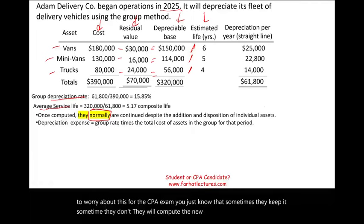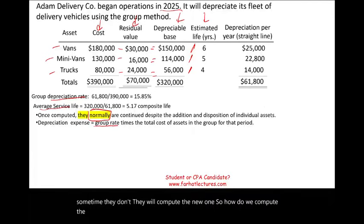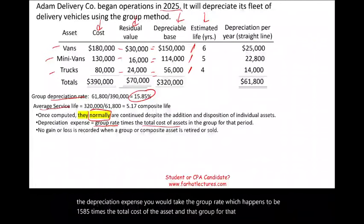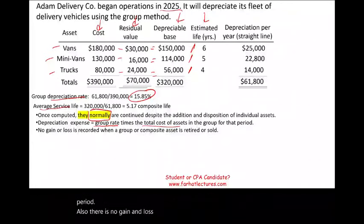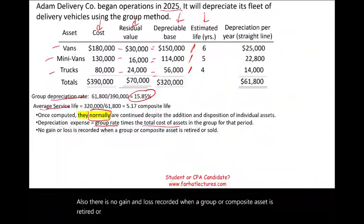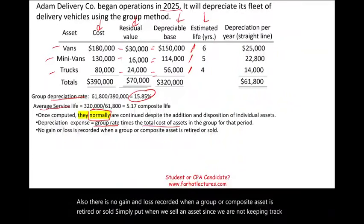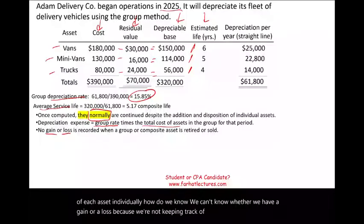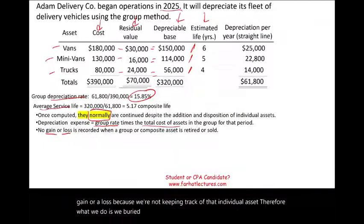To compute the depreciation expense, you take the group rate of 15.85% times the total cost of assets in the group for that period. Importantly, there is no gain or loss recorded when a group or composite asset is retired or sold. Since we are not keeping track of each asset individually, we cannot know whether we have a gain or loss. Therefore, we bury the gain or loss in accumulated depreciation.